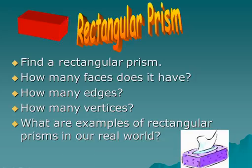How many edges does the rectangular prism have? There are four edges up, four around, and four down — so 12 edges, just like the cube. How many vertices? Vertex is a point where two edges meet each other — one, two, three, four up and four down, so eight vertices, also like the cube. We can notice that the cube and the rectangular prism have the same number of faces, vertices, and edges.